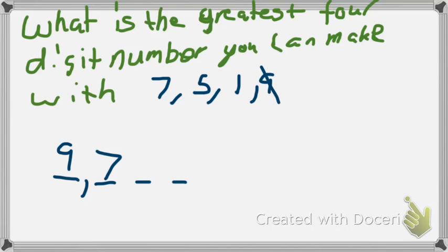I'll wait. So I mark off the seven. Now my tens, which is my next greatest place. Five. I'm going to put the five in there. And finally, my one, which is the smallest, goes in my smallest place, which is my ones. So the largest number I can make is 9,751.